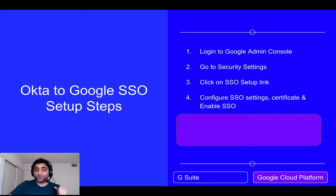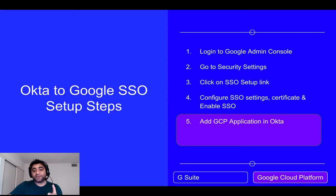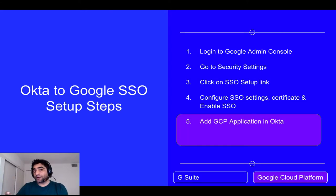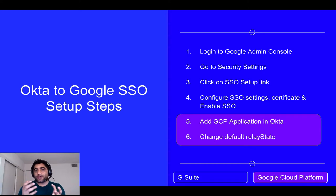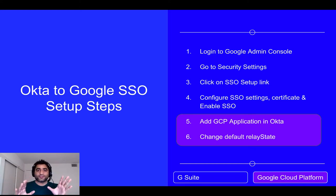In case you're using Google Cloud Platform, after these four steps there are two additional steps. Step five is to add the Google Cloud Platform application in Okta, and step six is changing the default relay state — which is essentially the landing page where your users will land once they are authenticated via your identity provider. I have a separate video where I talk about SSO terminology if you want to watch that too.